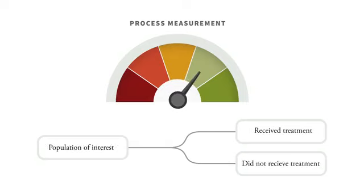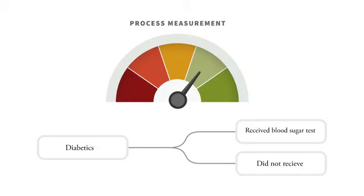There can also be measures focused on people with particular health conditions. For example, it can be recommended that people diagnosed with diabetes get their blood sugar tested regularly and controlled — one can go gather data and assess whether that's happening. Or for patients with cardiovascular disease and diabetes, are they using statin drugs appropriately to control their cholesterol levels? Do people get appropriate follow-up after a hospitalization for mental illness? All those would be process measures.